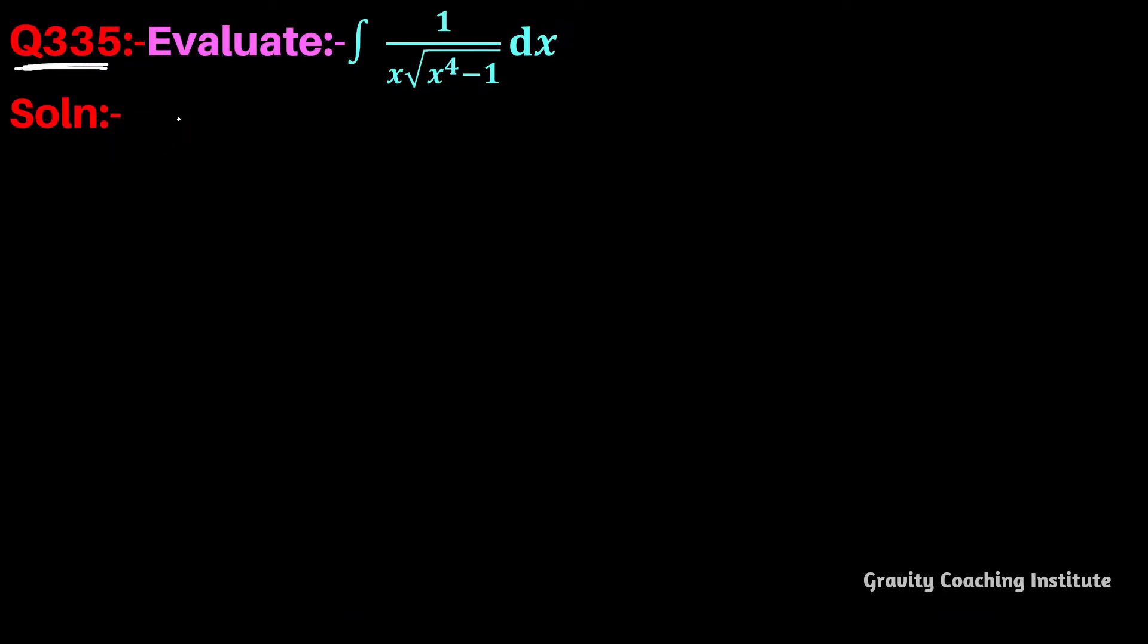Question number 335: Evaluate the integration of 1 divided by x times square root of x to the power 4 minus 1, dx. First of all, let I equal to the integration of 1 by x into root over x to the power 4 minus 1, dx.